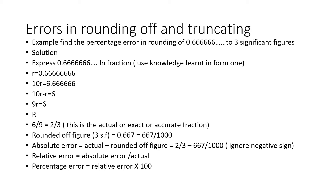Rounding off 0.6 recurring to three significant figures gives 0.667, which as a fraction is 667 over 1000. The absolute error for rounding off is given by the actual fraction minus the rounded-off fraction — use fractions because they are exact, not decimals. So you get 2/3 minus 667/1000. If the answer is negative, ignore the sign, because 'absolute' means you discard the negative.